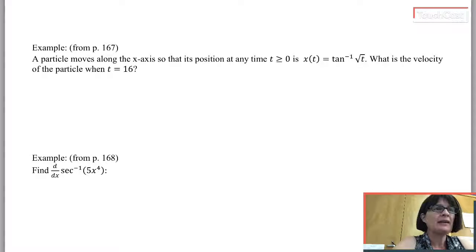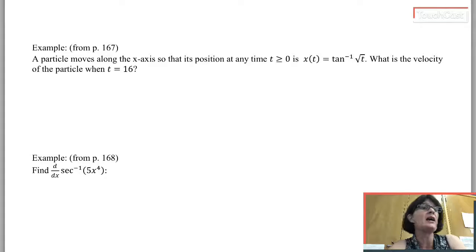Just notice that x of t is the position function, so v of t, the velocity, is going to be the derivative of the position function. The thing I've been asked to find is the velocity when time is 16, that's v of 16. So before I can tell you v of 16, I have to find an expression for v of t. That's going to be my job first.